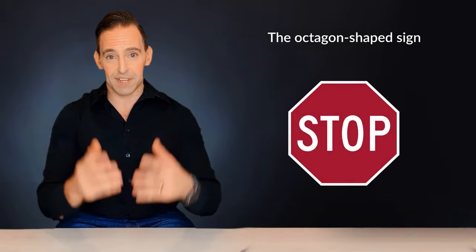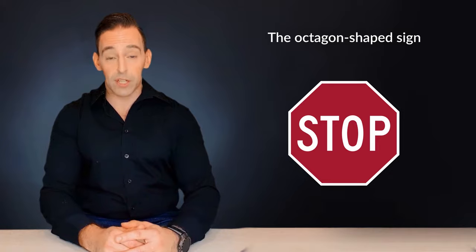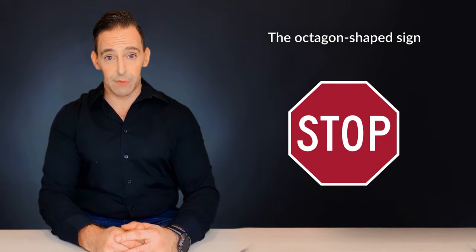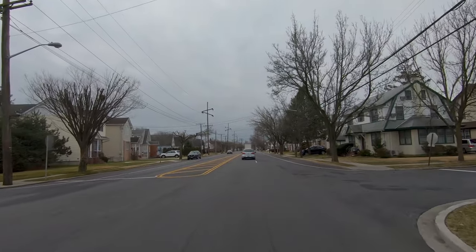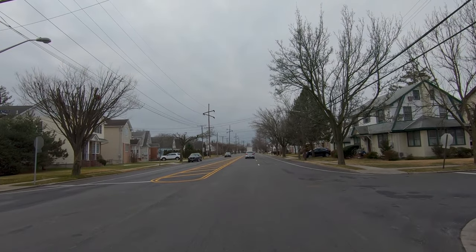You probably know the next one already, the octagon shaped sign. Stop signs are always octagonal and red, making them very difficult to miss. You must always come to a complete stop when facing a stop sign. And no, rolling stops are not okay.